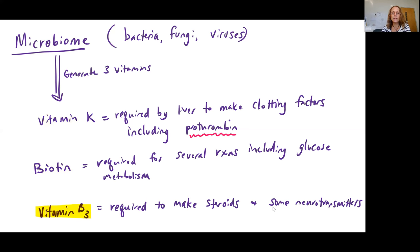And then the third is vitamin B3, which is required to make important steroids. Steroids include cholesterol and estrogen and androgens like testosterone and also some important neurotransmitters. So obviously the microbiome is important here in helping to produce some of these vitamins for our body.